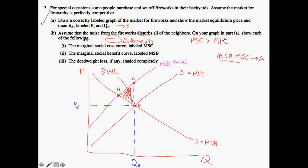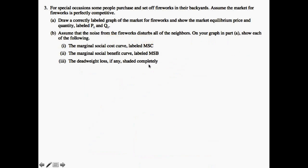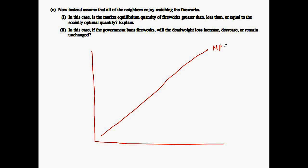That covers part B — we've shown the marginal social cost, the marginal social benefit, and the deadweight loss. Now in part C, we're told that neighbors actually enjoy watching fireworks, so we have a positive externality. We need to find the market equilibrium quantity and compare it to the socially optimal quantity. Because it's a positive externality, marginal private cost equals marginal social cost.